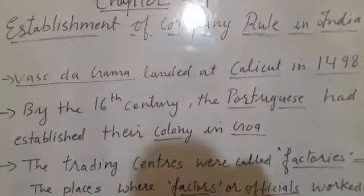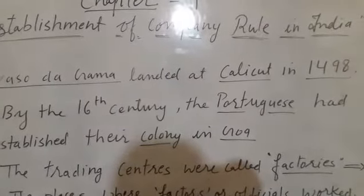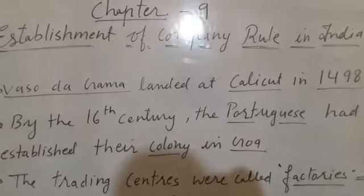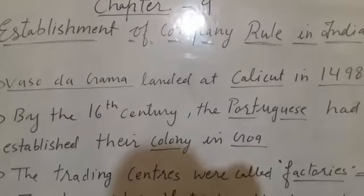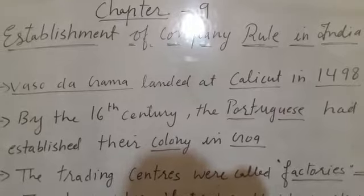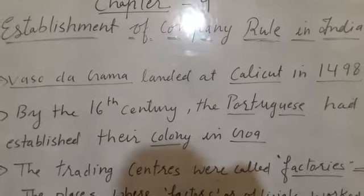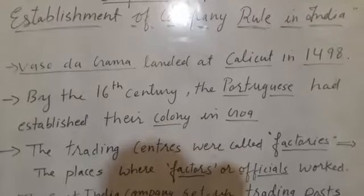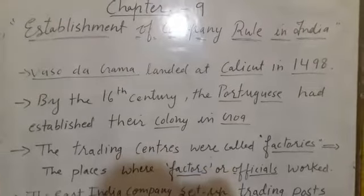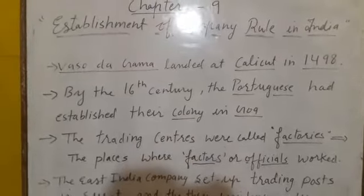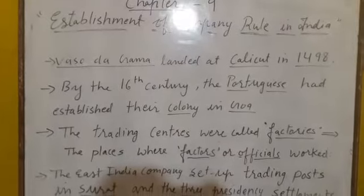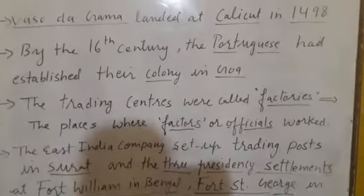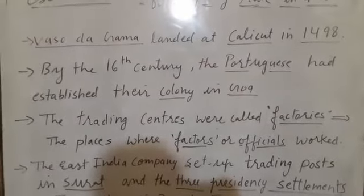Vasco de Gama was the Portuguese explorer. He landed at Kalikat in 1498, on the Malabar coast. That is the beginning of the European era in Indian history. And in the 16th century, the Portuguese had established their colony in India.